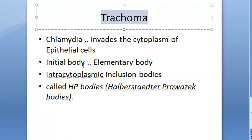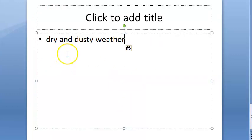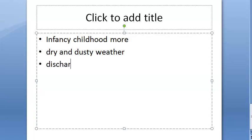Trachoma usually comes in infancy and early childhood, though there is no age bar. In trachoma endemic zones, the main source of infection is the conjunctival discharge of the affected person. Trachoma is more prevalent in places with very dry and dusty weather. The discharge is the main source of infection.